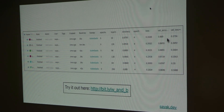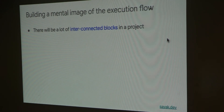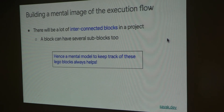I highly encourage you to try out Weights and Biases for your machine learning experiments and projects — it's an open source package. Moving forward, it's very important to build a mental image of the execution flow of your machine learning project. There will be lots of different interconnected blocks in a project, and this can be recursive — a block can have several sub-blocks. It's very important to keep track of these lego blocks and build a mental model of how they are connected, what their logical execution flow is, to stay consistent across development throughout the project.